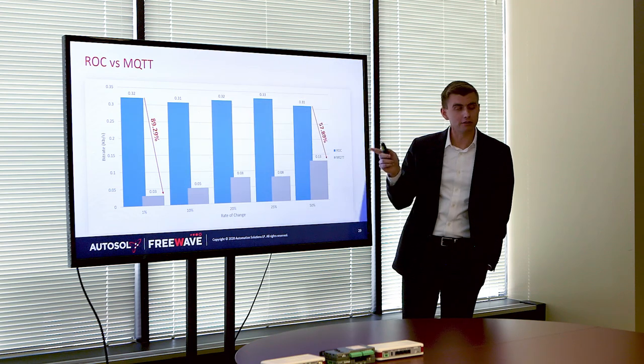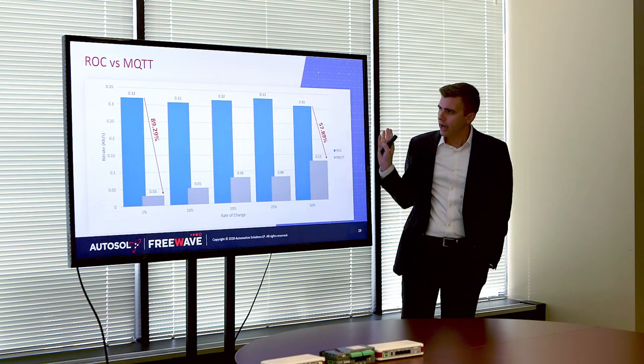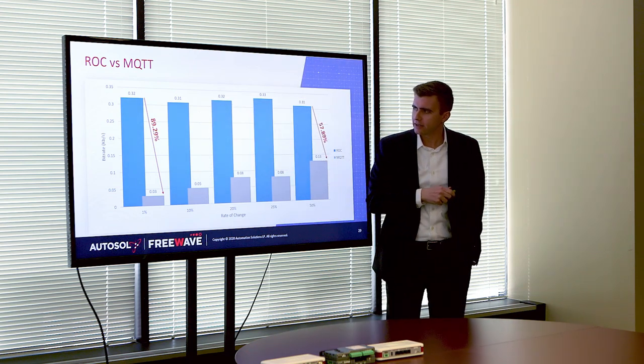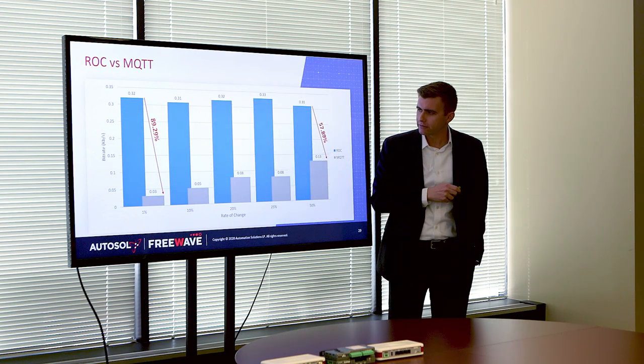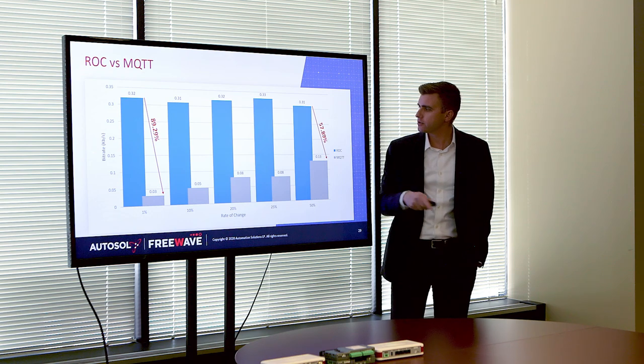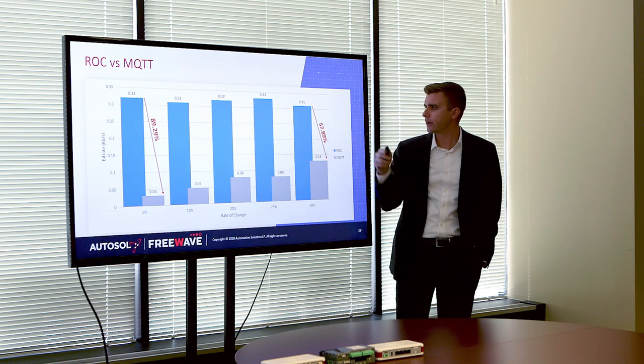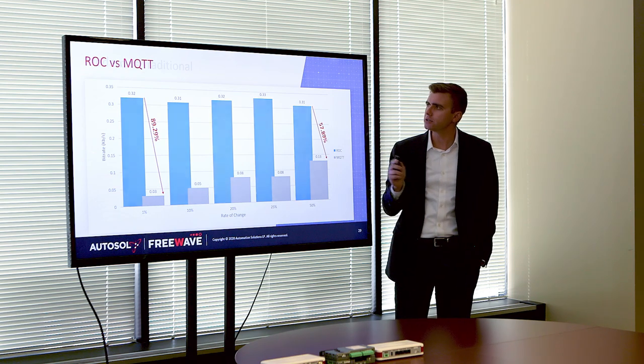And that ROC data is visualized in a bar graph showing 89% to 57.89% reduction of bandwidth.